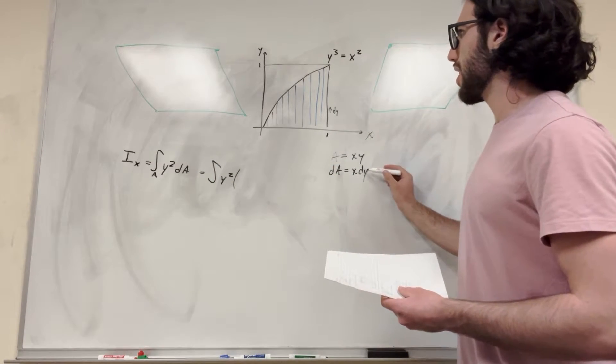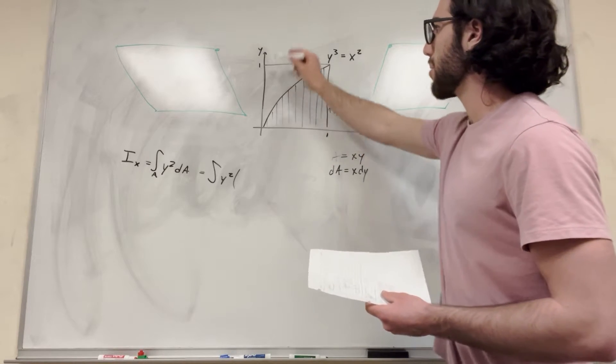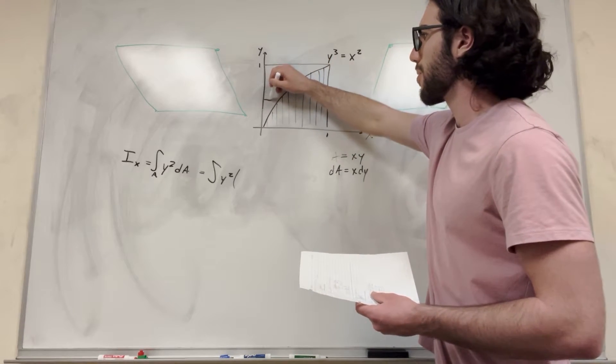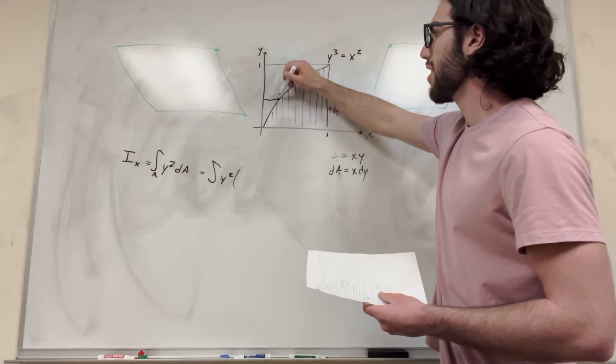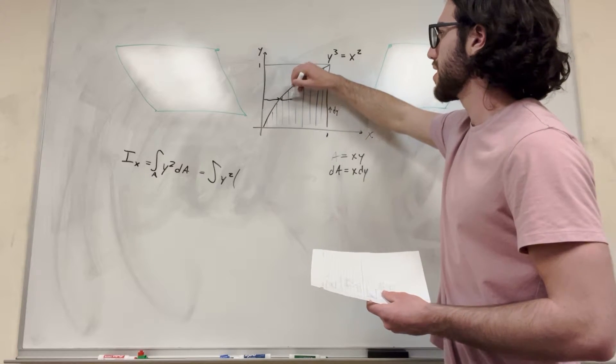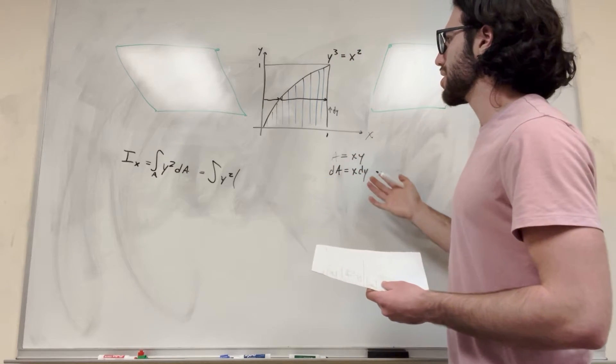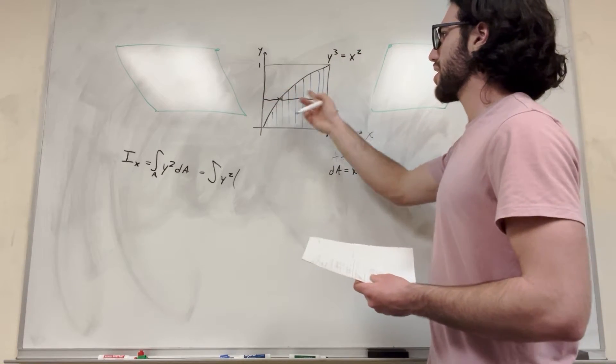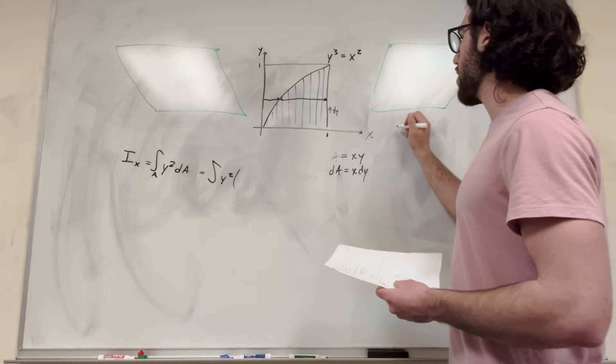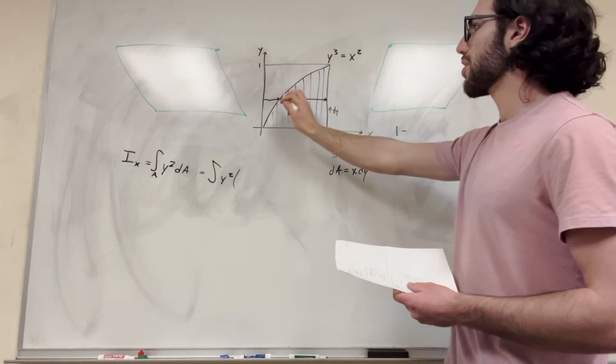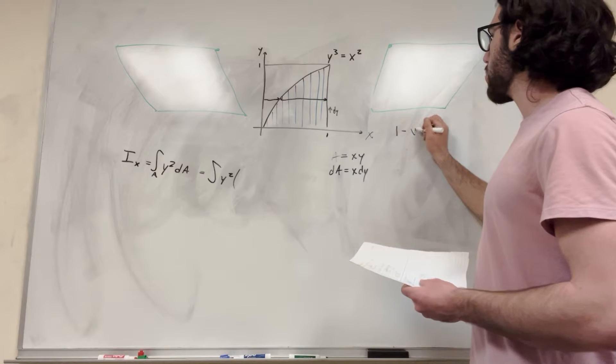So when we're integrating with respect to dy, we're moving up this way but we're coming off the y-axis. So what we're finding is this length. But we want to find this length. This is the actual length we want to find. So to find this length, what we actually want to do is we want to take the entire area. So it's one across, and then we're going to subtract whatever x is. So one minus x.